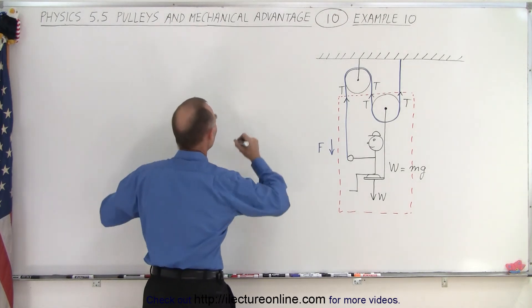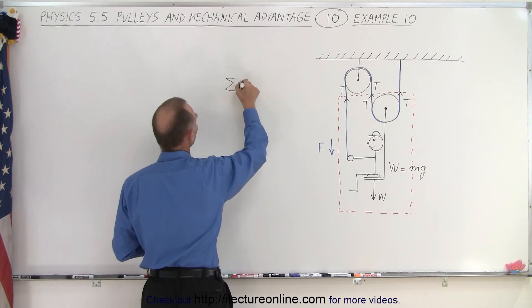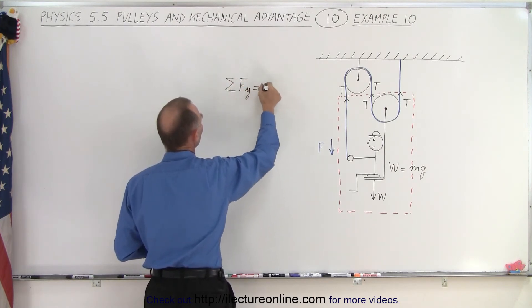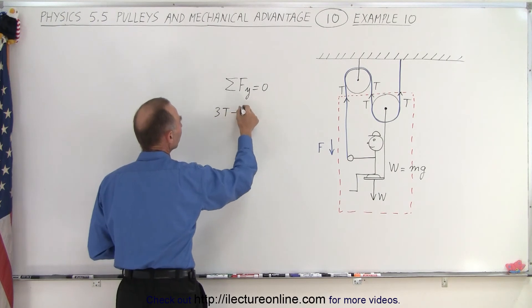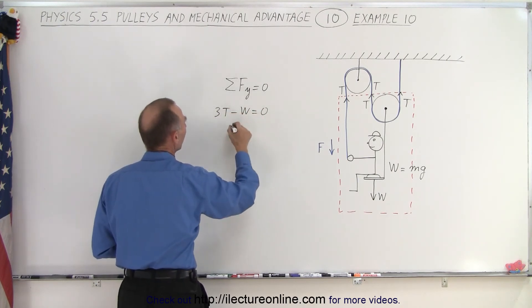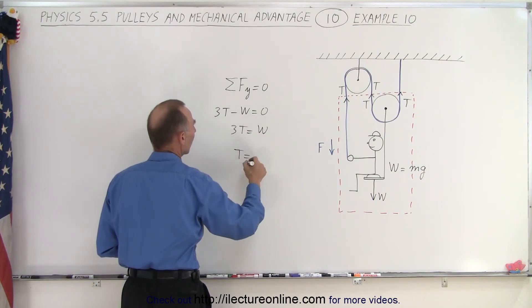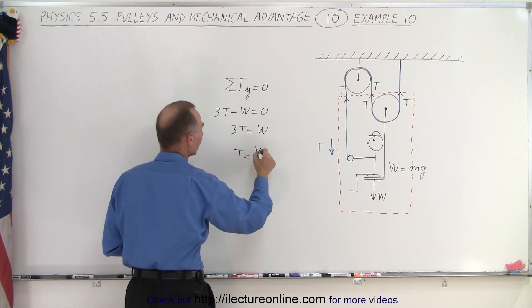Now, we use the equation, the sum of all the forces in the y direction must add up to zero. So we have three times the tension pulling up minus the weight pulling down equals zero, or three times the tension equals the weight of the person, or the tension required is equal to the weight divided by three.